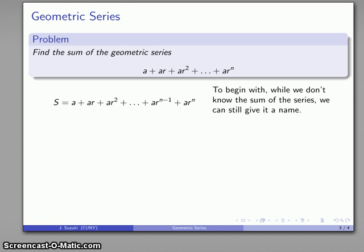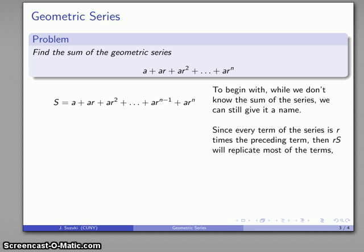Now the crucial observation here is that every term of the series is R times the preceding term. So if I find R times S, well that's R times all of these terms in the series, and what that's going to do is it's going to take each of these terms and produce something that looks very similar to each of these terms. So I'll do a little bit of algebra. RS is AR, AR squared, AR cubed, and so on.